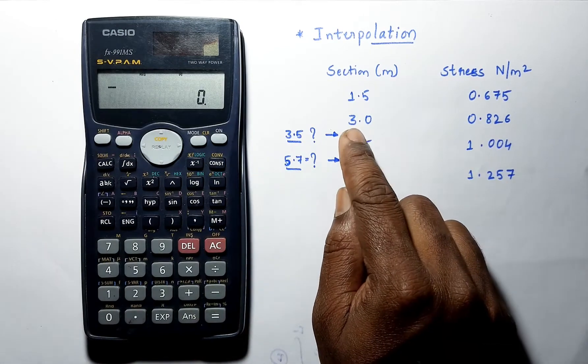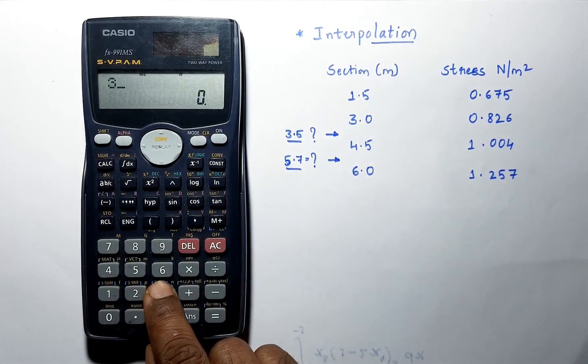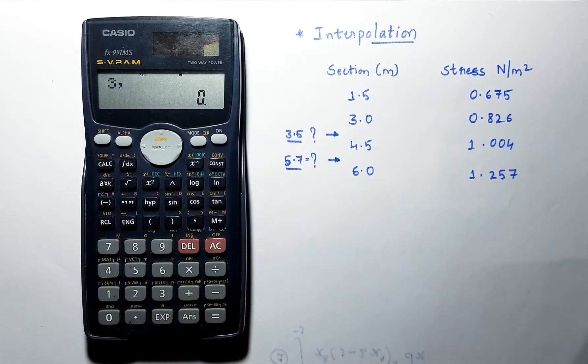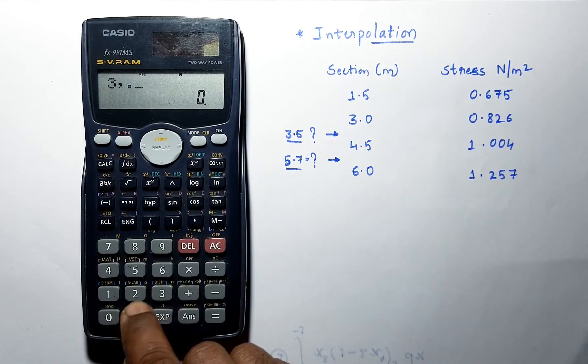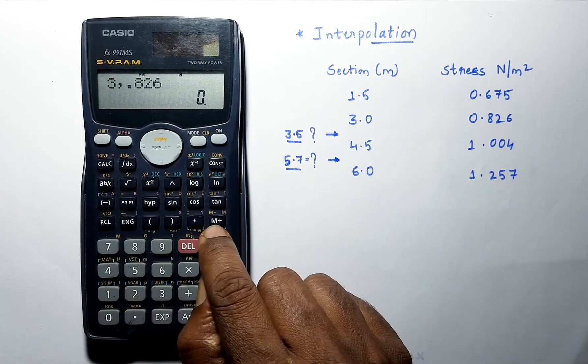Now before we have to store these values. Press 3, 0.826 and press this M plus button.